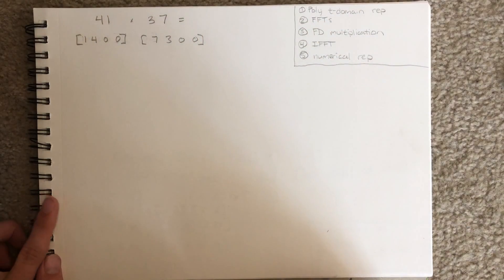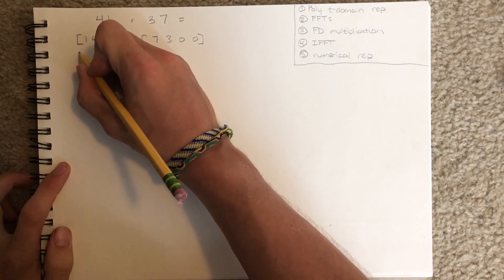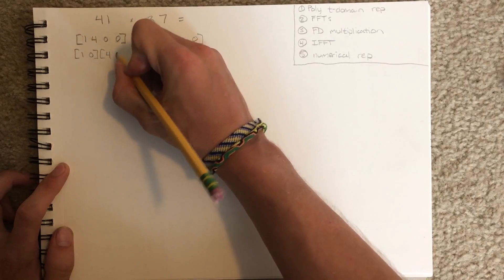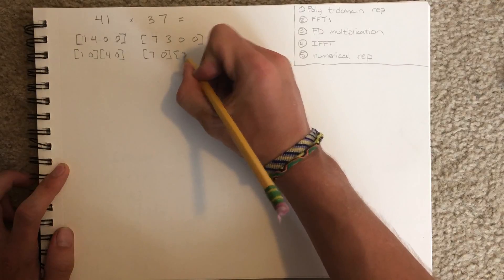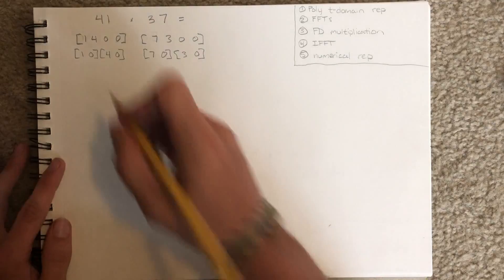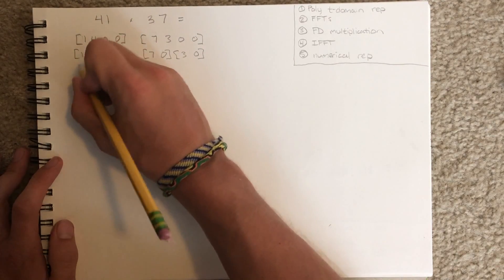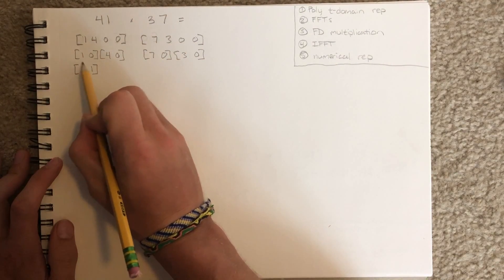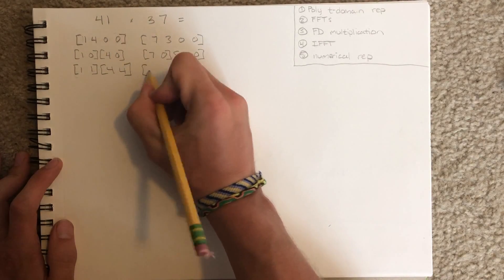Now we must take the fast Fourier transforms of each of these time signals separately. Periodically decimate. Conjugate our smaller time signals. This is the discrete Fourier transform. 1 plus 0. 1 minus 0. Again. Again.